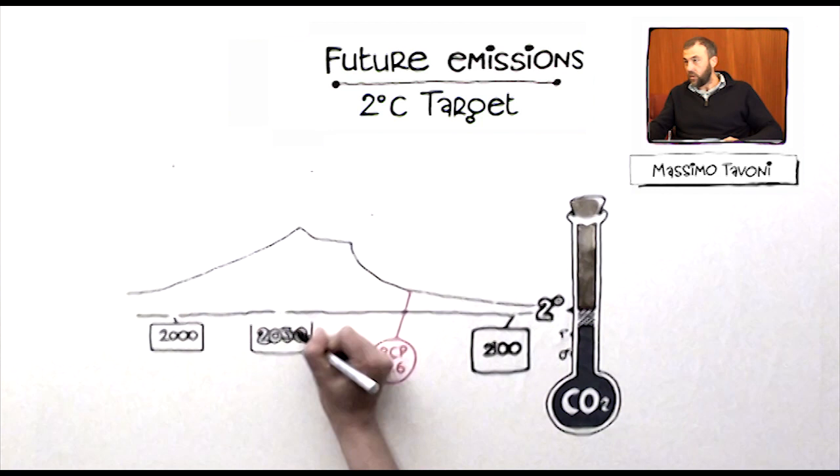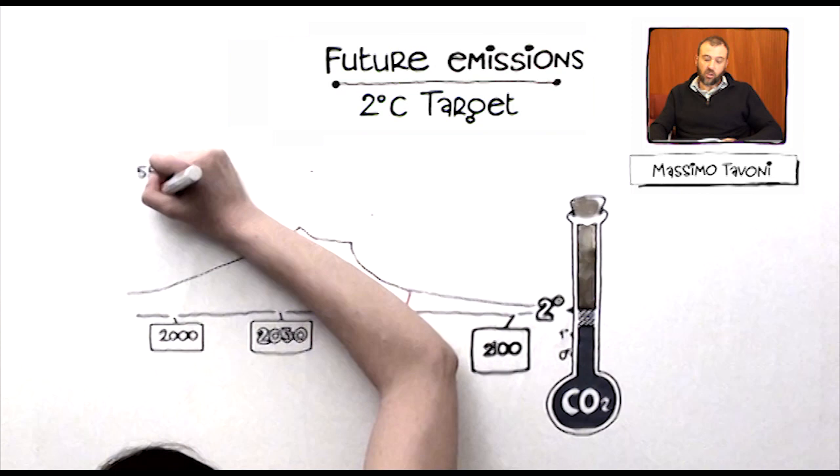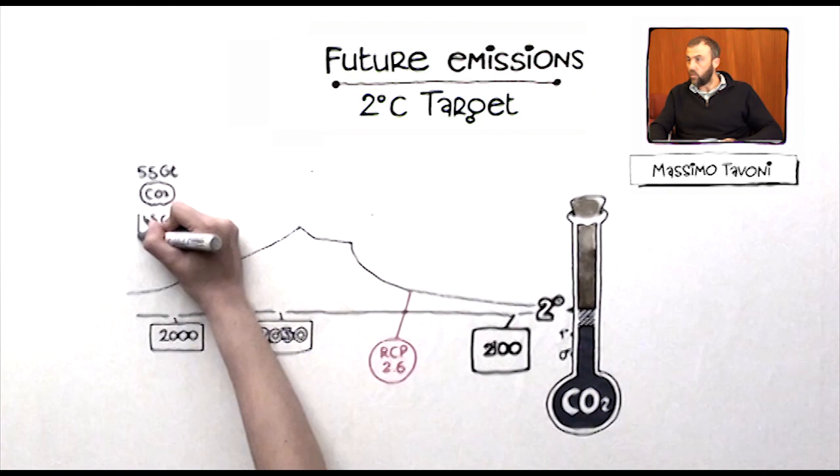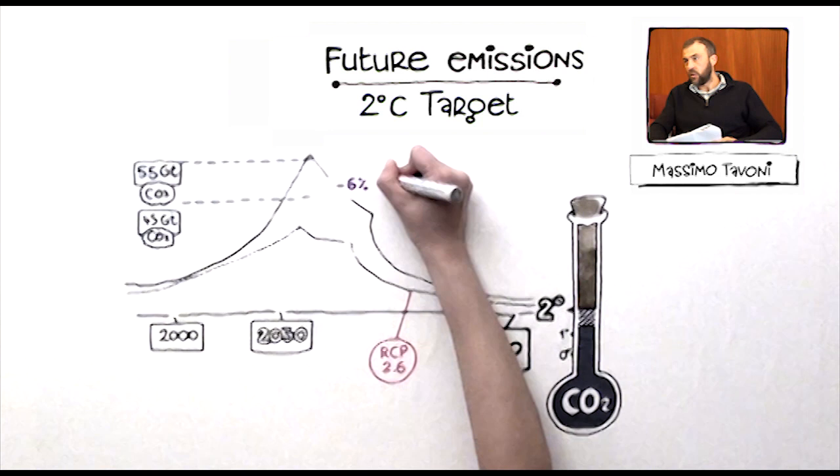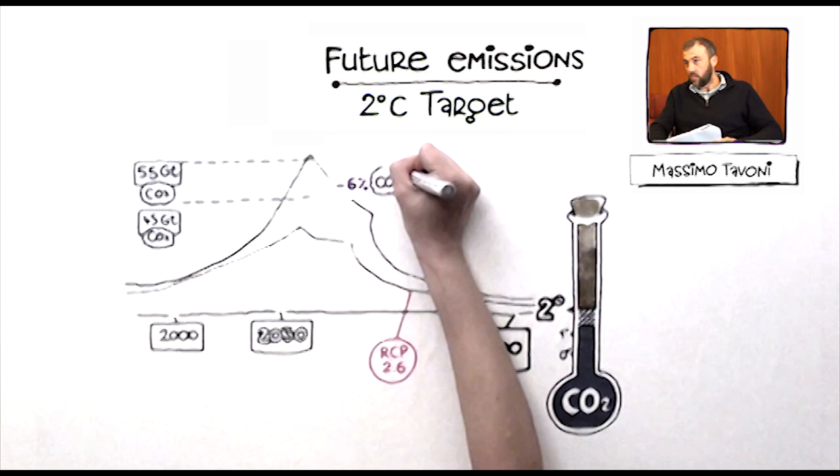For example, if we take emissions that increase to above 55 billion tons of CO2 in 2030, then in order to achieve 2 degrees afterwards, we will need to reduce emissions by as much as 6% every year, which is a huge emission reduction and is completely at odds with historical rates of actually an increase in emissions of about 1 to 2% a year.